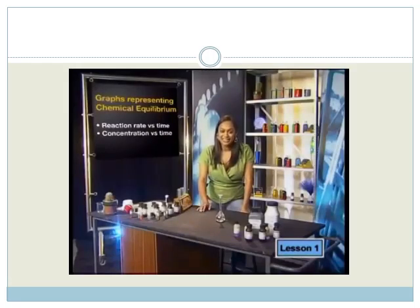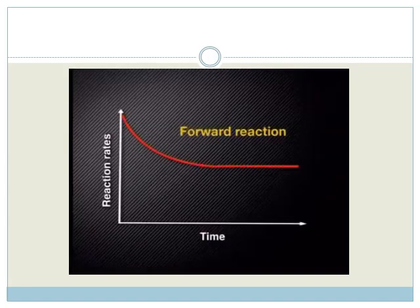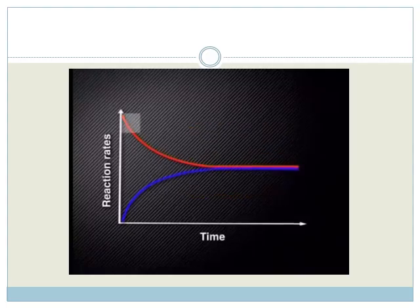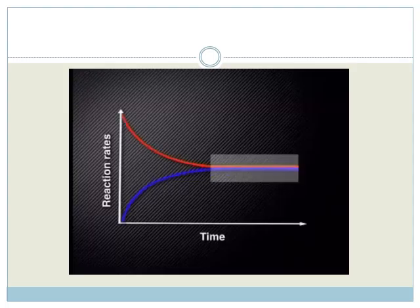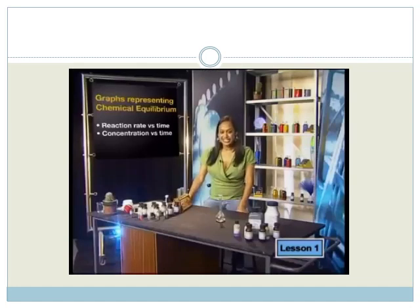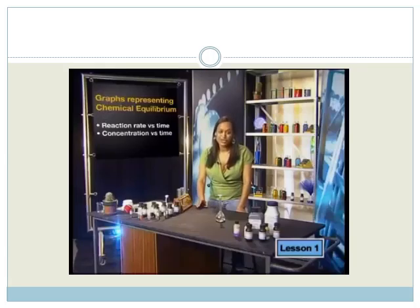With that microscopic view in mind, let's work out what the graph of reaction rate versus time looks like. We show the rate of the forward reaction in red and the rate of the reverse reaction in blue. When the reaction starts, the forward reaction has a high reaction rate with many effective collisions and lots of product molecules forming. As reactants form products, the rate slows down. At the same time, the reverse reaction starts from zero and increases. When the rates of the forward and reverse reactions are equal, chemical equilibrium is established.